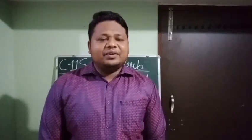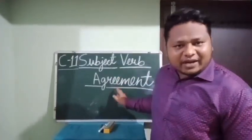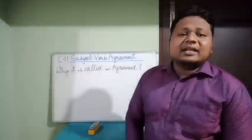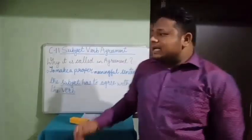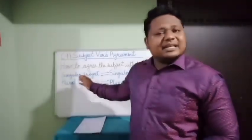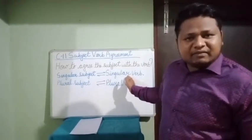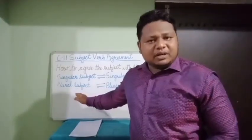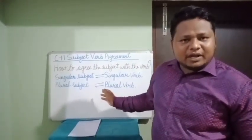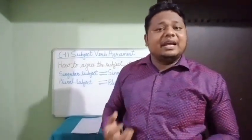Very good morning to all the students. Today we are going to do chapter 11 of your grammar book, that is subject-verb agreement. Now why is it called an agreement? It is called an agreement because to make a proper meaningful sentence, the subject has to agree with the verb. How do we agree the subject with the verb? The answer is very simple: when the subject is singular, we use the singular form of the verb, and when the subject is plural, we use the plural form of the verb. Let us clarify this with some examples.